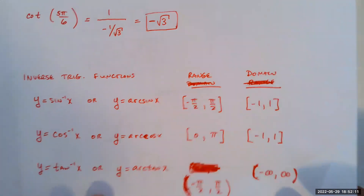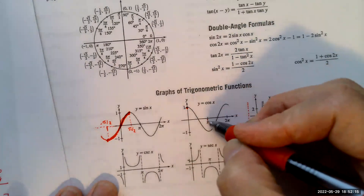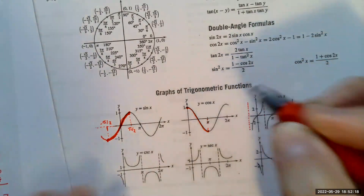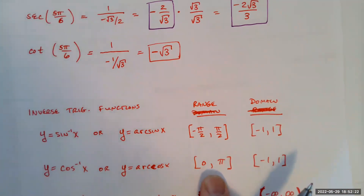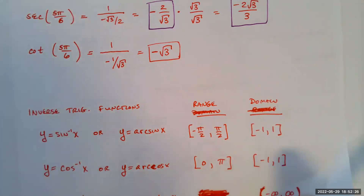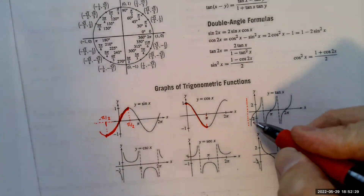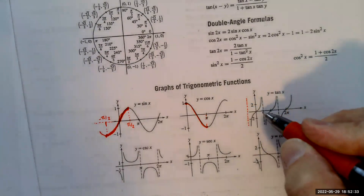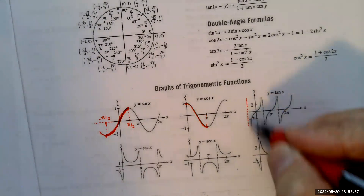For the cosine function, we restrict the domain from 0 to π. Because of that, the range of the inverse cosine function is 0 to π, and the domain is still negative 1 to 1, just like inverse sine.